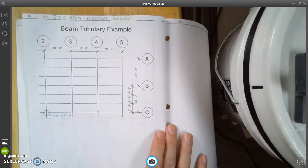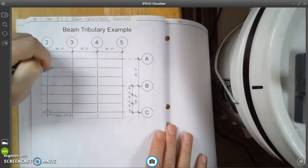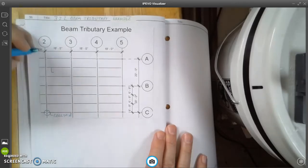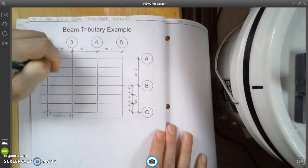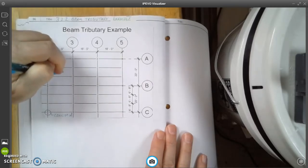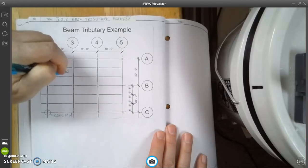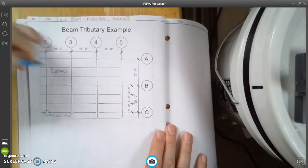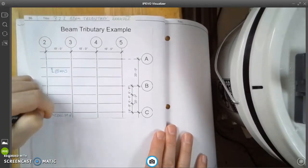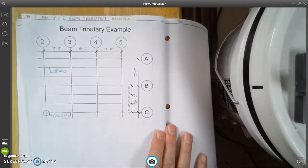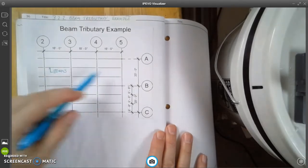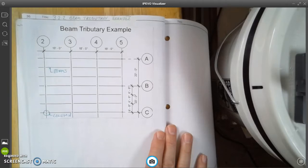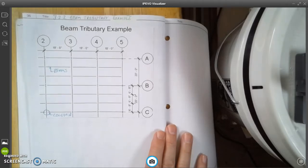The other two things we need to label on here are these lines right here. These are beams. So all the little lines that run horizontally, those are beams.